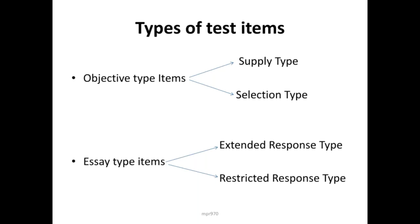In this video we will be looking into the types of test items that are generally used in achievement tests. There are two types of test items: objective type items and essay type items.